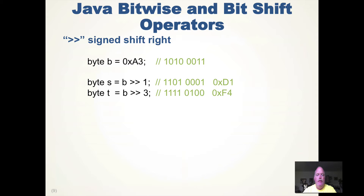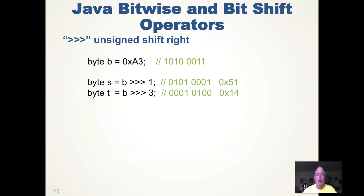Signed shift right takes the most significant bit — if it's a 1, we continue inserting 1s; if it was a 0, we insert 0s. Since byte B has a most significant bit of 1, signed shift right inserts 1s: S has one 1 inserted, and T has three 1s inserted. These numbers are negative if you consider them as two's complement. Unsigned shift right instead inserts zeros regardless of the sign bit, treating the value as an unsigned number.